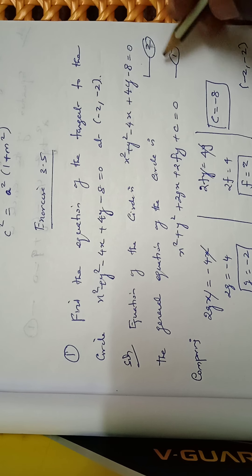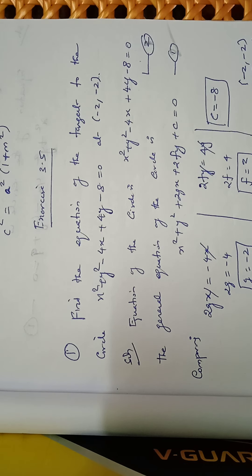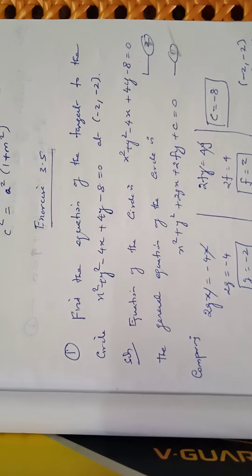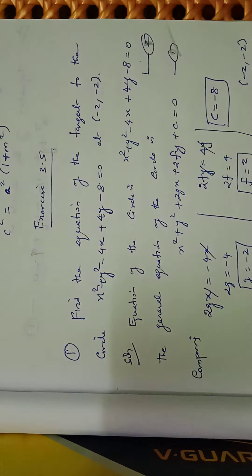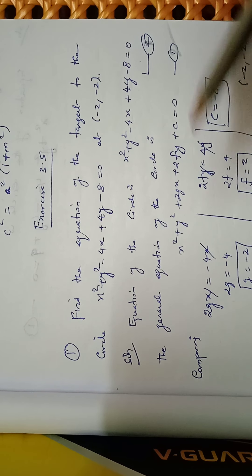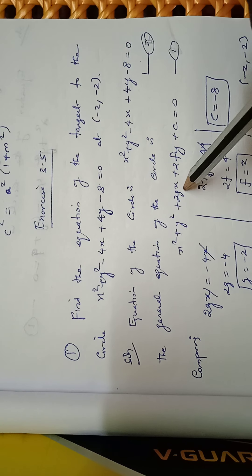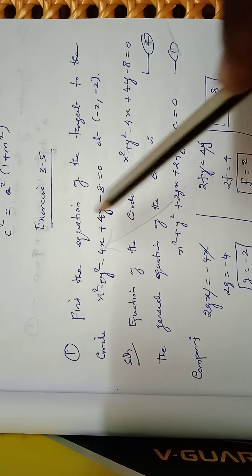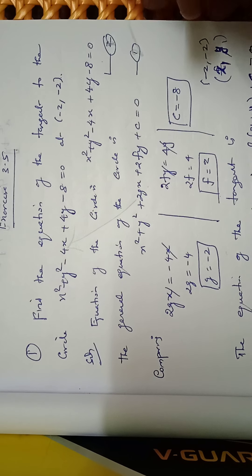The general equation of the circle is x² + y² + 2gx + 2fy + c = 0. This is equation number 2. Comparing these two expressions: 2g = −4, so g = −2.